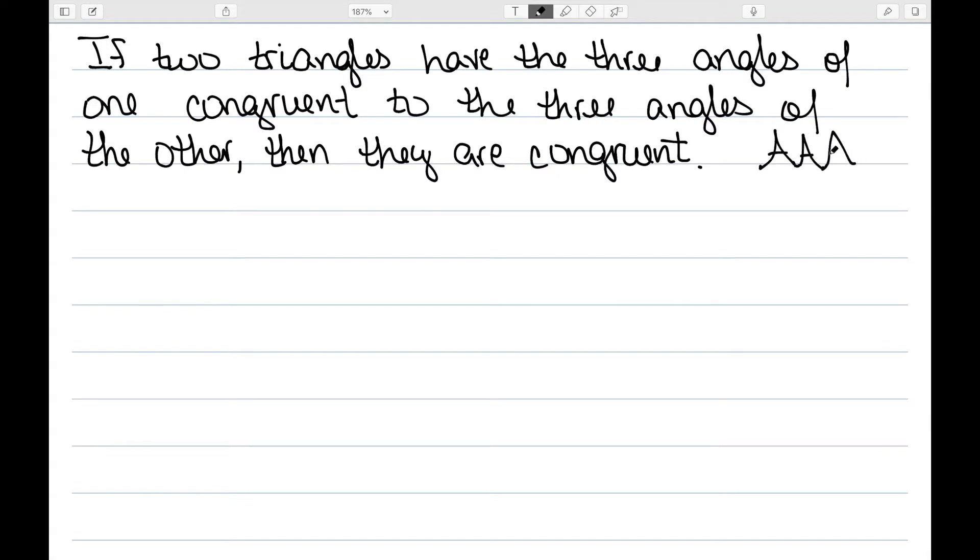This is essentially the AAA congruence criteria that does not exist for Euclidean geometry. In order to do this, I'm going to start with two triangles. We'll call them ABC and XYZ.